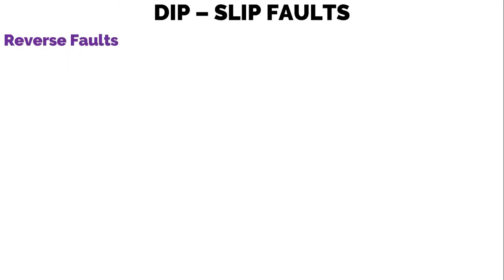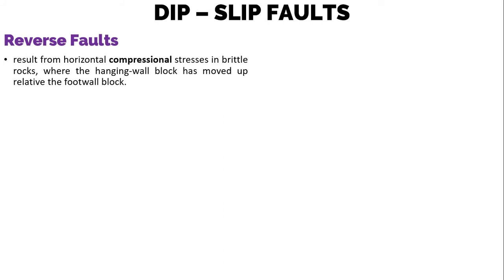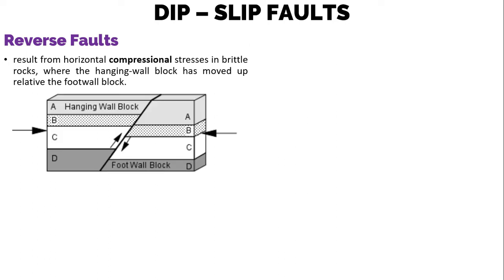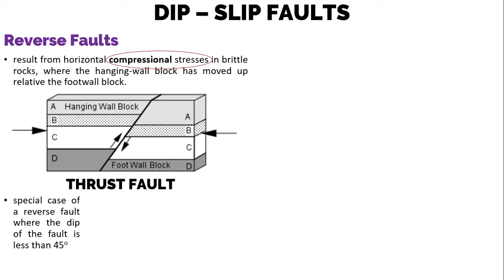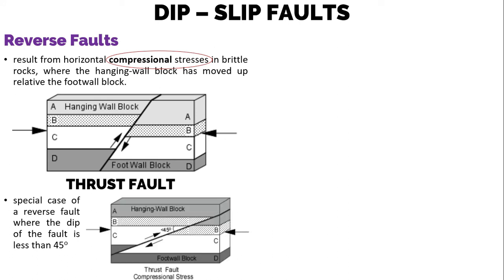Next we have reverse faults. Reverse faults result from horizontal compressional stresses in brittle rocks, where the hanging wall block has moved up relative to the foot wall block. A thrust fault is a special case of a reverse fault where the dip of the fault is less than 45 degrees. Thrust faults can have considerable displacement measuring hundreds of kilometers.